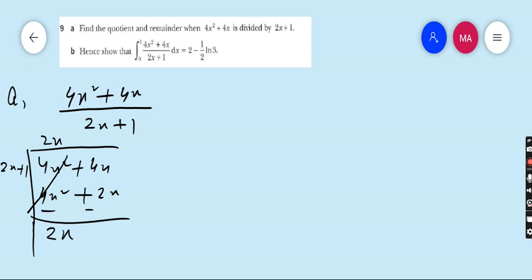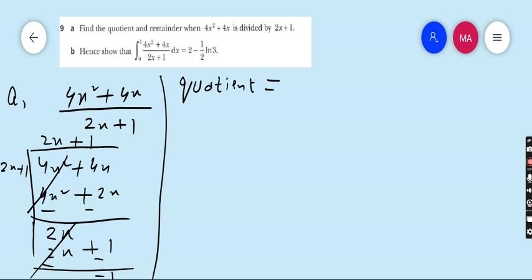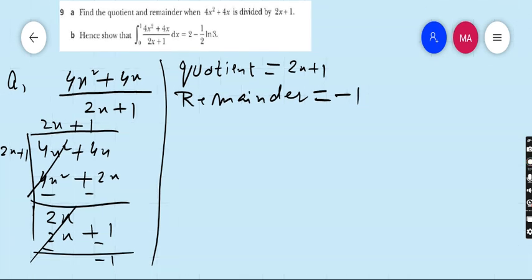We need 2x, so we write 1. 1 times 2x is 2x, 1 times 1 is 1. 2x minus 2x cancel, it is minus 1. Hence the quotient is equal to 2x plus 1, and the remainder, that is the last left term, is minus 1. This is our final answer of part a.